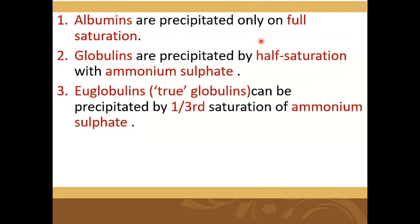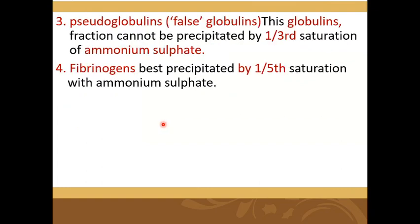Albumins are precipitated by fully saturated ammonium sulphate solution. Globulins are precipitated by half saturated ammonium sulphate solution. Euglobulins — two globulins — can be precipitated by one-third saturation of ammonium sulphate solution. Pseudoglobulins, or false globulins, can also be precipitated by one-third saturation. Fibrinogen is precipitated by one-fifth saturation of ammonium sulphate solution.